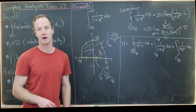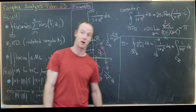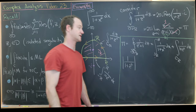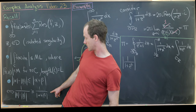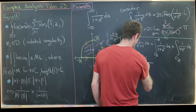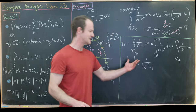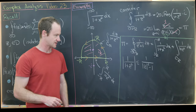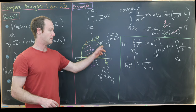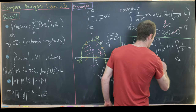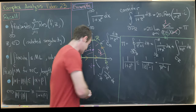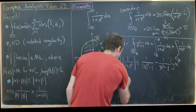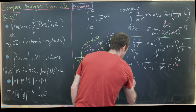We need to show that as R → ∞, the integral over C_R goes to zero. Let's calculate the modulus of 1 over (1 + z²) on the semicircle. Using our reverse triangle inequality, this is less than or equal to 1 over |z² − 1|. Along this circle the modulus of z is always R, so this equals 1 over (R² − 1). This plays the role of M in our ML estimate.